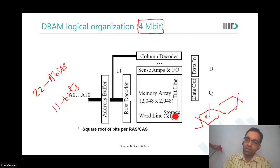This is row address. This is column address. And then I will be able to get this data on the Q bus. Are you able to see this?